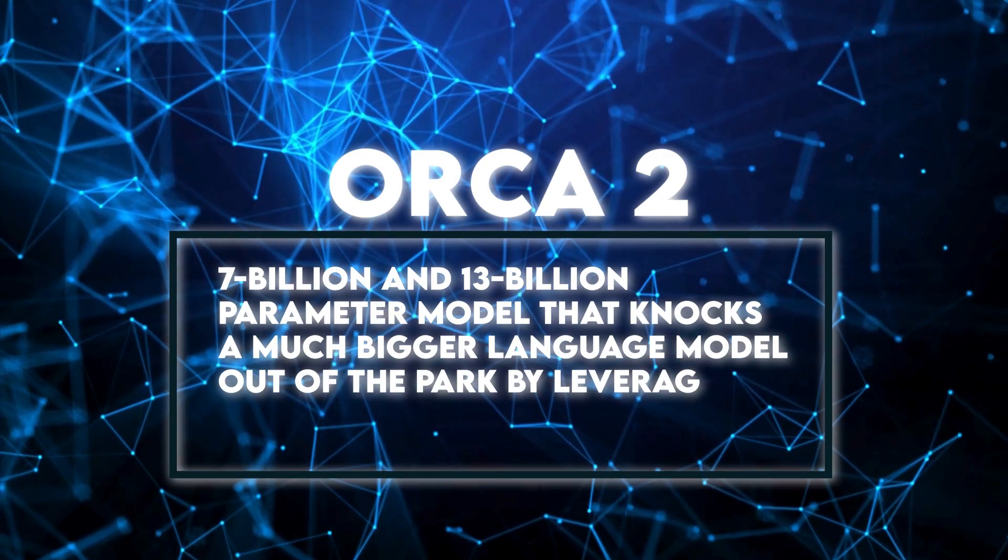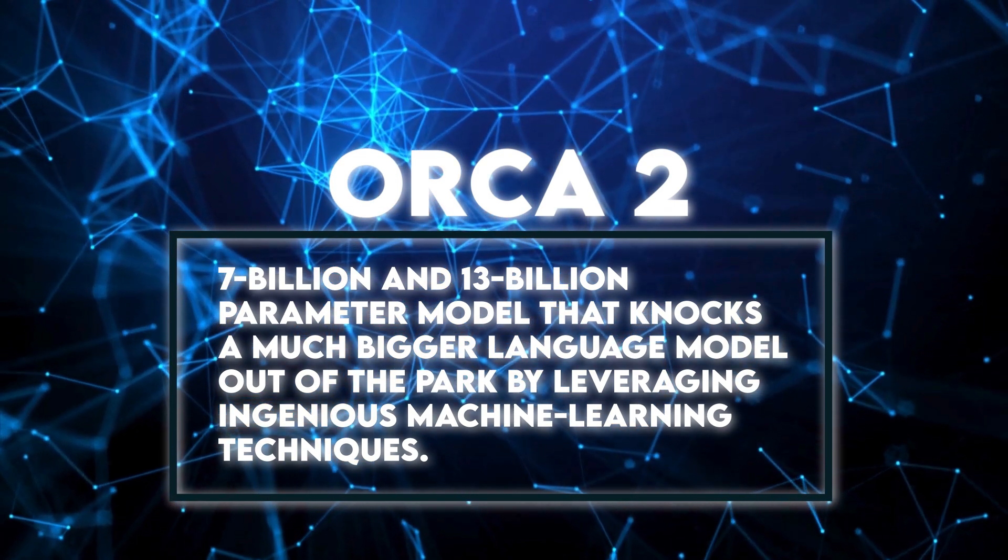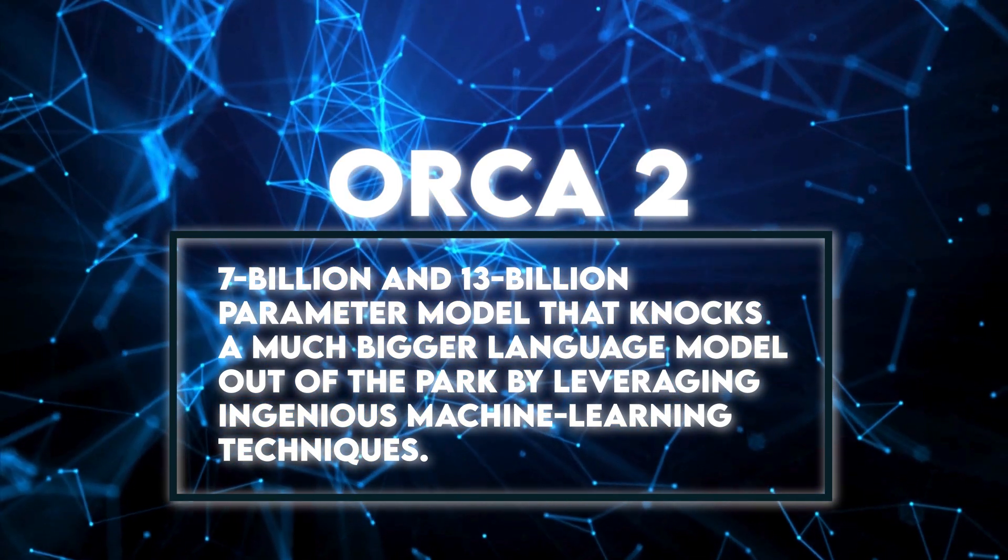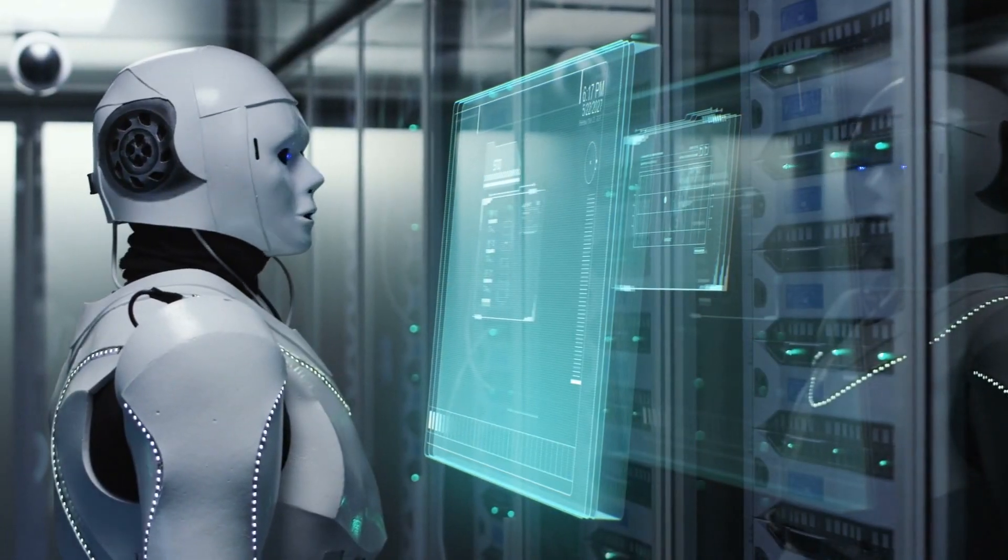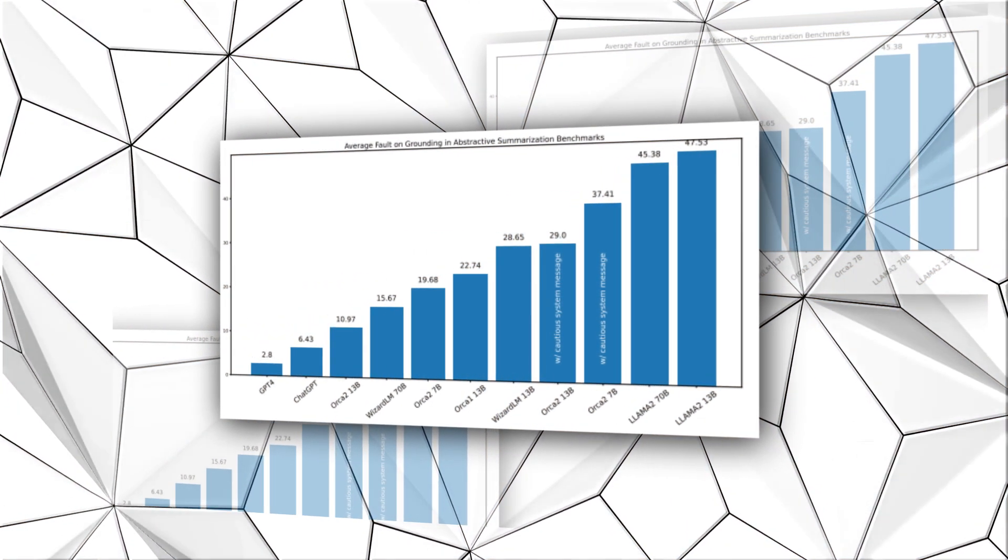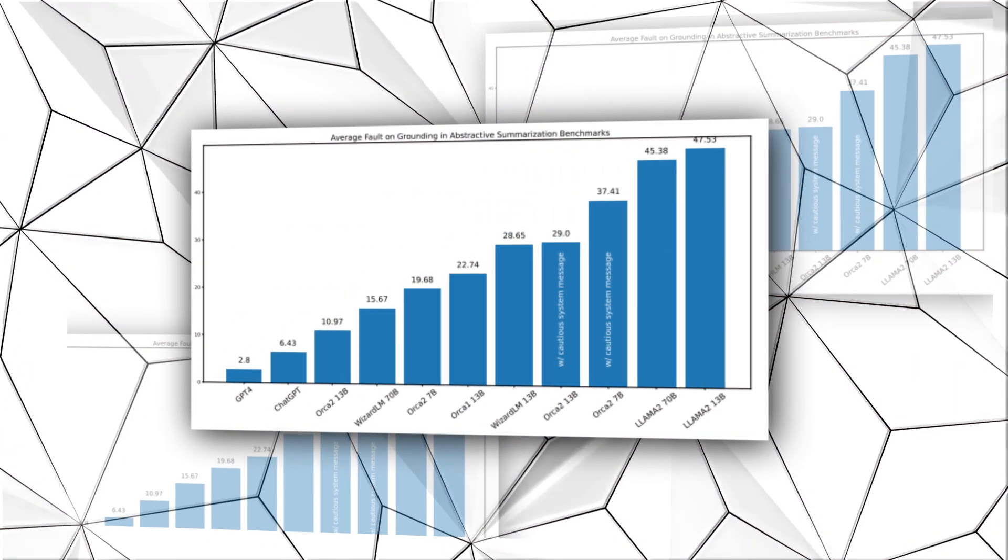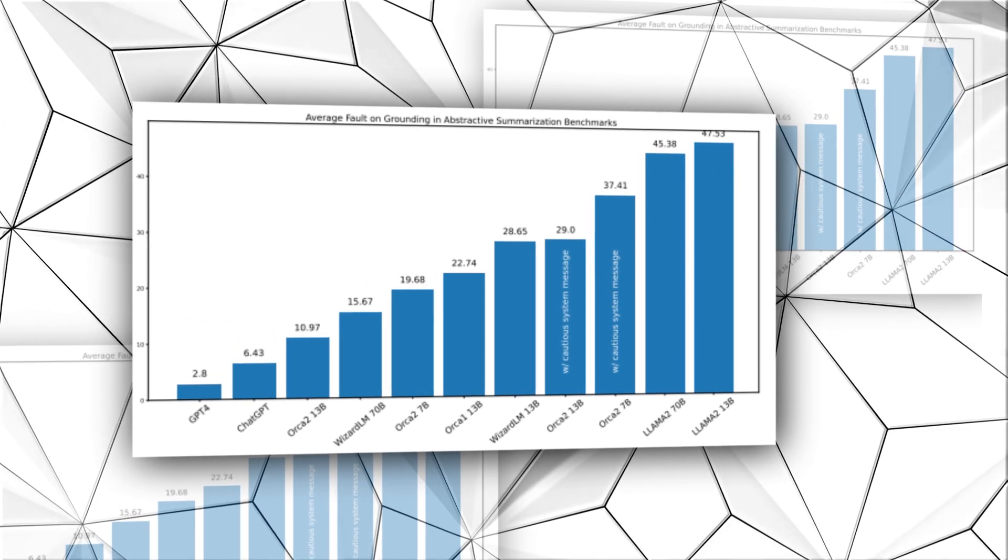Orca 2 is a 7b and 13b parameter model that knocks a much bigger language model out of the park by leveraging ingenious machine learning techniques. These techniques allow it to imitate a large model. Benchmark tests have shown that the fact that it learns from a base model doesn't make it inferior. Rather, Orca 2 performs better than its base model on all fronts.